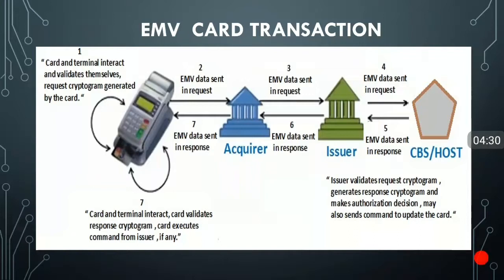When you insert the card, there is interaction between the card and the POS device — both validate themselves, and the card generates a request cryptogram. The card has a chip inside; inside the chip there is an encrypted algorithm along with a specific key generated by the issuer bank. Based on this, a request cryptogram is generated and sent to the acquirer bank. The acquirer bank sends it to the network, which, based on the first six digits of the card number, routes it to the issuer bank.